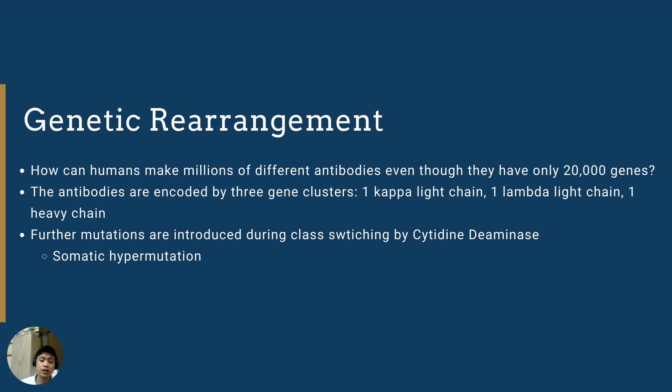And this base, cytidine, once deaminated, transforms into thymine. By the action of cytidine deaminase, there are point mutations that are created in the gene of this B-cell. And that process is what we call somatic hypermutation.